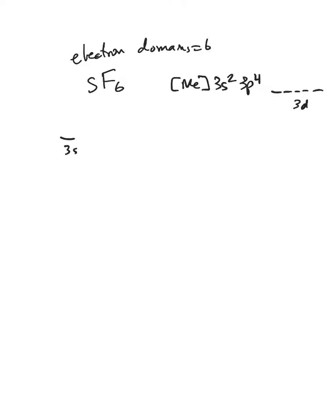But it's got these empty 3d orbitals that we can use. So here's my 3s, my trio of 3p orbitals, my quintet of 3d orbitals. We've got two electrons in 3s, and one, two, three, four electrons in my 3p.